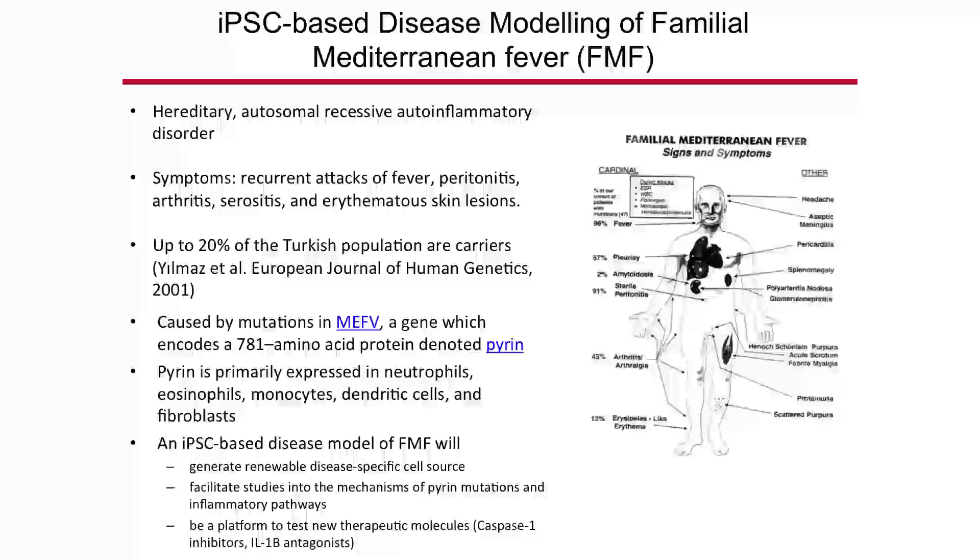FMF is caused by a single point mutation — one base pair change in the DNA — and it primarily affects immune cells. We obtained patient samples from both healthy controls and an FMF patient, took a small skin biopsy, derived the skin cells, and confirmed the patient has the mutation by DNA sequencing. We then converted these cells into induced pluripotent stem cells using Yamanaka's original method. This is being carried out by a master's student, Keram.